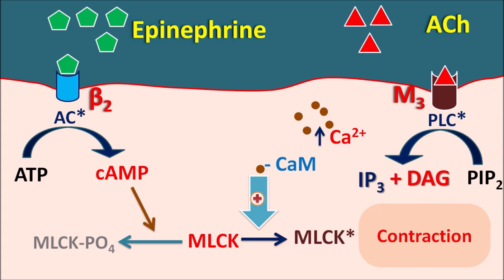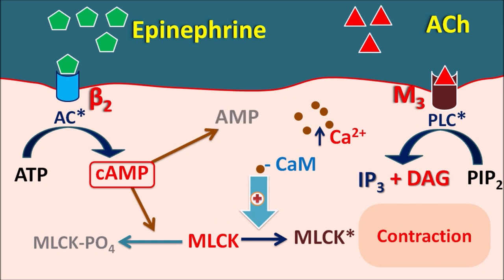Epinephrine produces bronchodilation by releasing cyclic AMP, while acetylcholine produces bronchoconstriction. They act oppositely and maintain homeostasis. However, within the smooth muscle, cyclic AMP can be converted into AMP — the inactive form — which cannot produce bronchodilation. This reaction is mediated by the enzyme phosphodiesterase (PDE). Thus, phosphodiesterase decreases the activity of cyclic AMP.